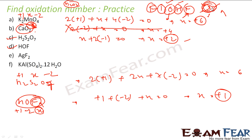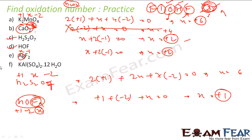Now AgF₂. Not a free element, not an ion. No oxygen, no hydrogen. Fluorine is present, so we apply fluorine equals minus 1. Silver is x. Sum rule: x plus 2 times minus 1 equals 0, so x equals plus 2. Silver has oxidation state plus 2. Note: in HOF fluorine was plus 1, but here in AgF₂ fluorine is minus 1.